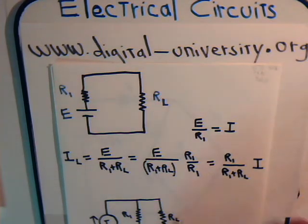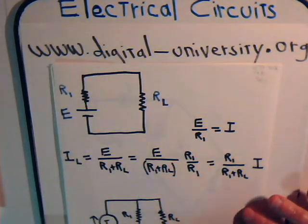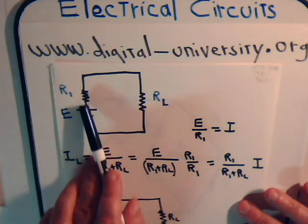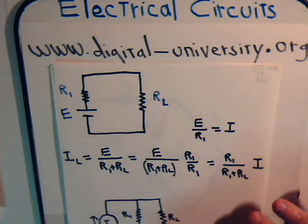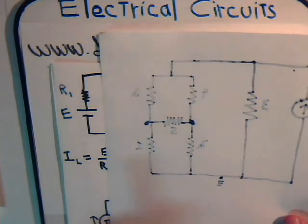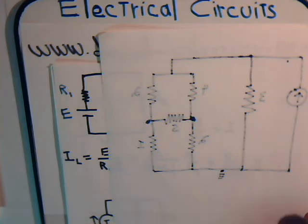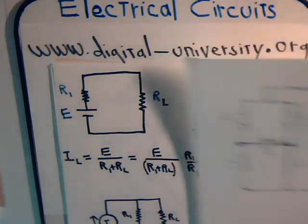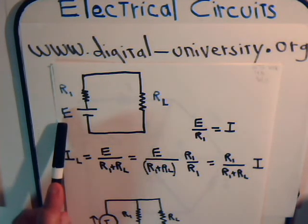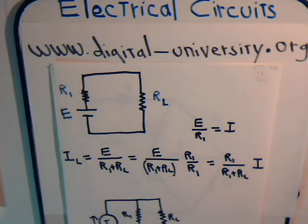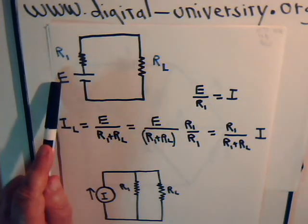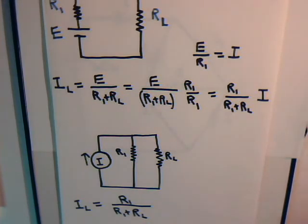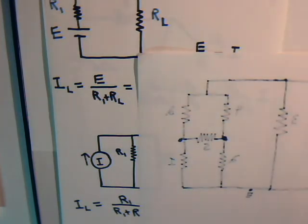This is a simple circuit — a voltage source and a resistor in series. This resistor might simply be the internal resistance of the voltage source. We can think of this part as the source part of the circuit. If we replace the voltage source with a current source, the magnitude of that current source equals the voltage divided by the series resistor.